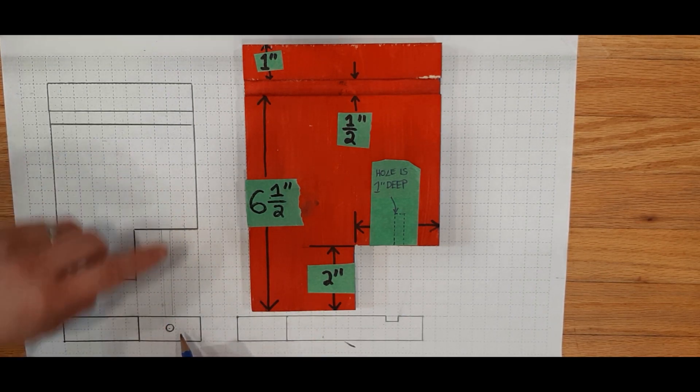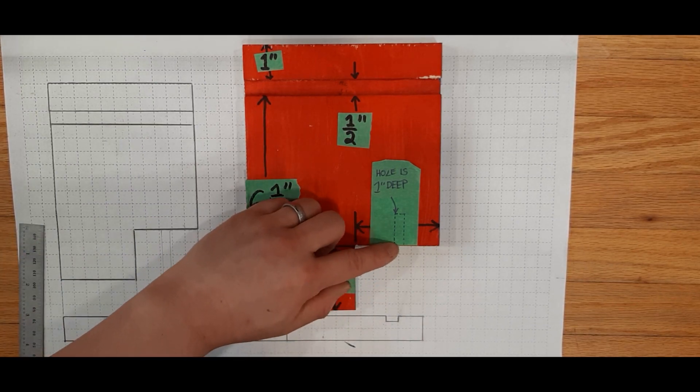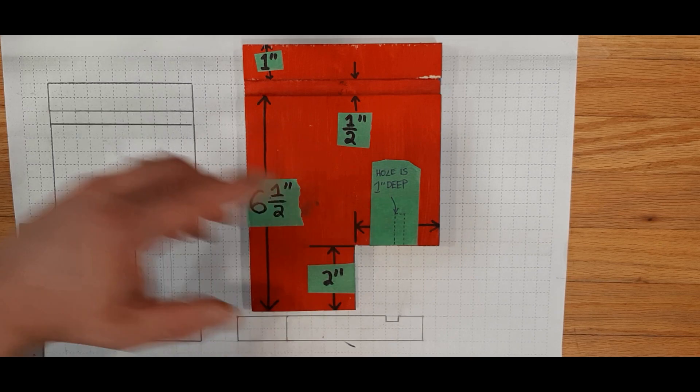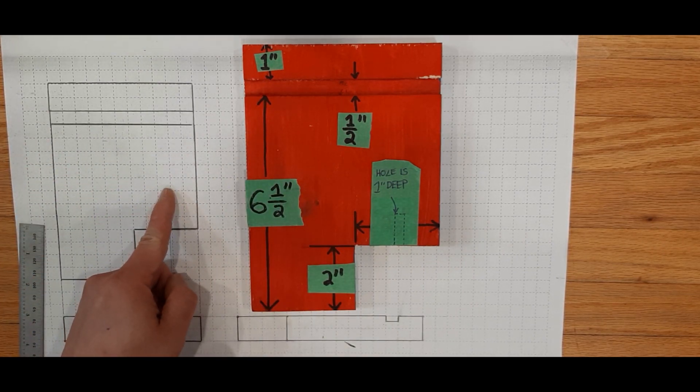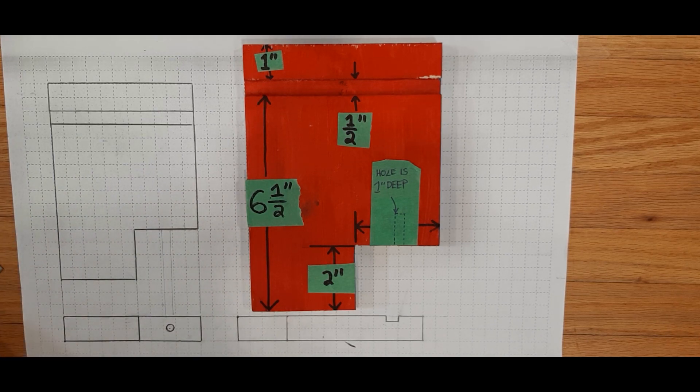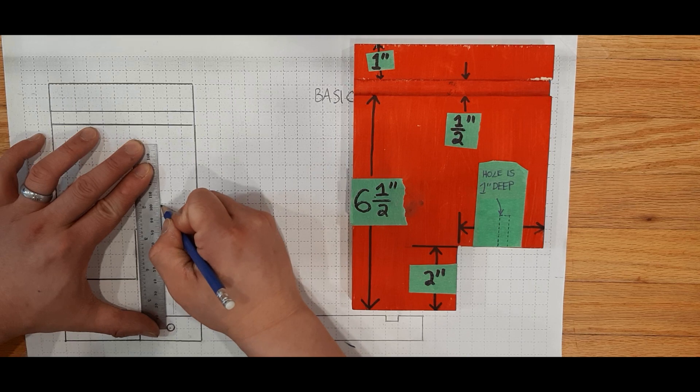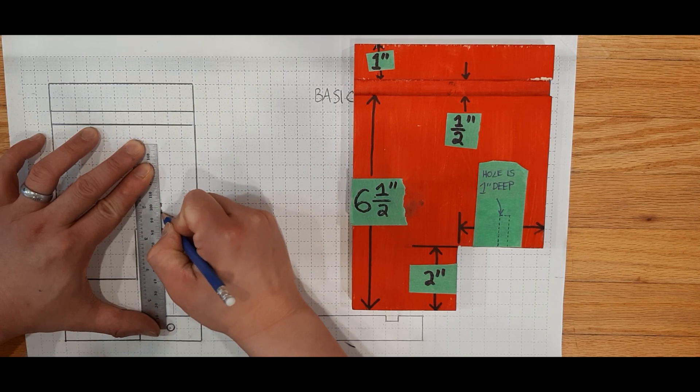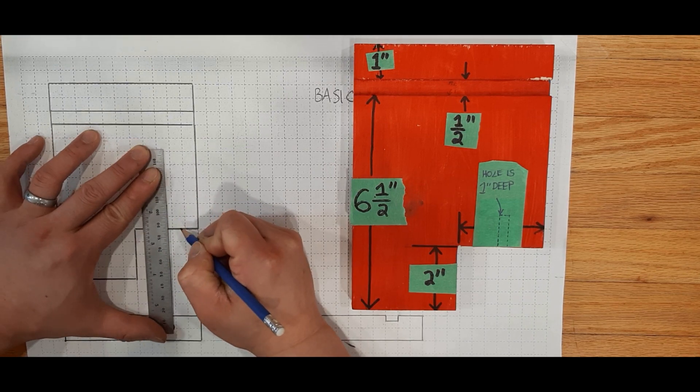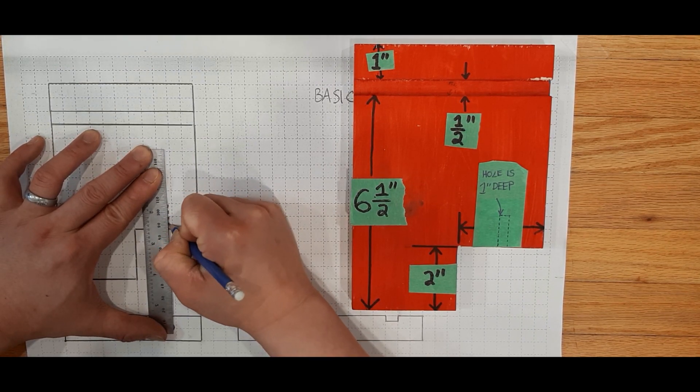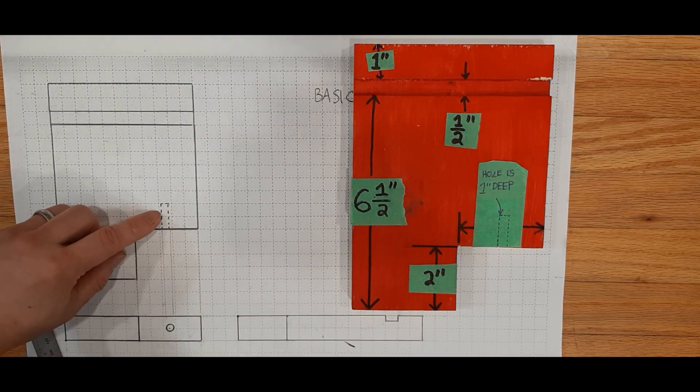Again, the hidden lines have to line up with what you see in the front view. Now, because we know that the hole is one inch deep, that means we need to go one inch into this block this way. Using our scale, that's two squares. And again, hidden lines are dotted. They're not solid. So there's my first hidden line.